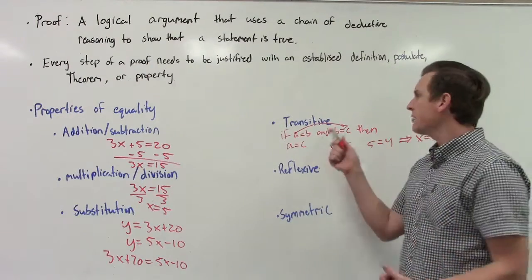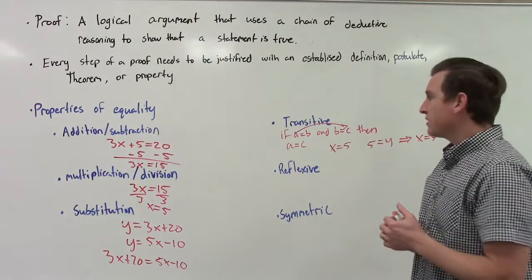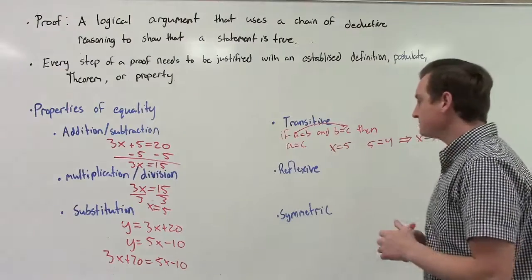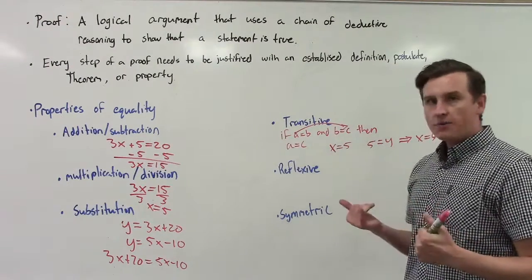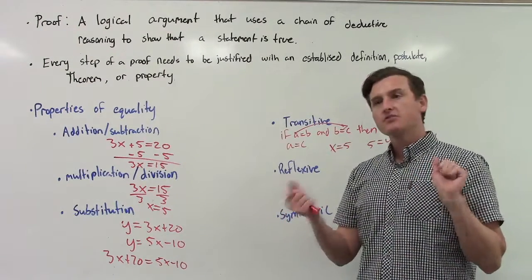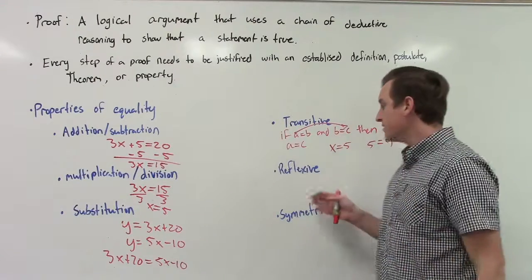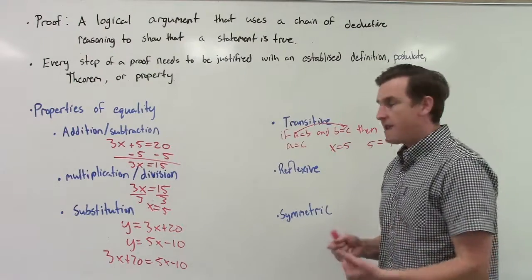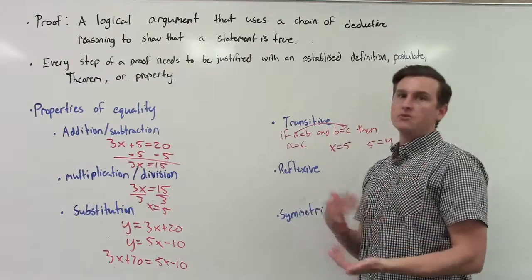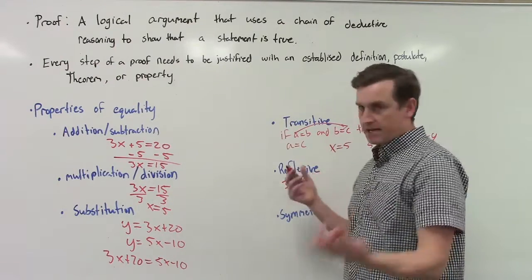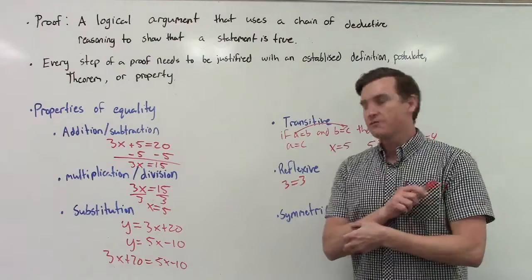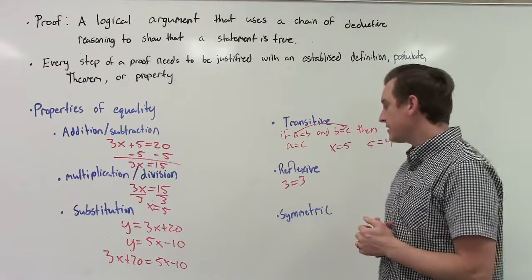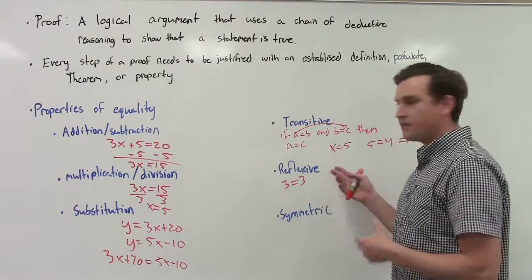We're going to talk about the transitive property of congruence probably later this week, alongside the transitive property of equality we have here. The reflexive property — think of a mirror, reflexive is like reflective — has to do with something being equal to itself. Every number is equal to itself, like 3 = 3. That's pretty obvious, but in geometry the reflexive property becomes a little less obvious when proving angle and segment relationships, which we'll cover later this week. Anything is equal to itself — that's the reflexive property of equality.